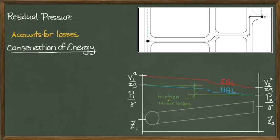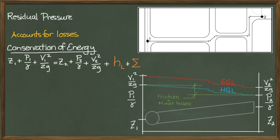Therefore, if we want to create an expression that defines the energy of the system as water moves from point 1 to point 2, we have the elevation, pressure, and velocity heads at point 1 being equal to the elevation, pressure, and velocity heads at point 2, plus the head loss due to friction, plus the summation of all the minor losses due to pipe fittings.